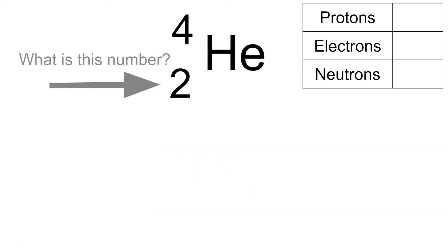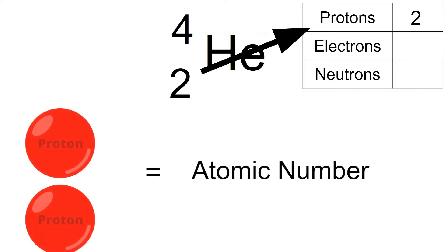So let's take a look at what is this number. Remember, this number is the number of protons. So there are two protons. And remember that the proton is also known as the atomic number.